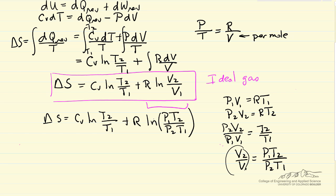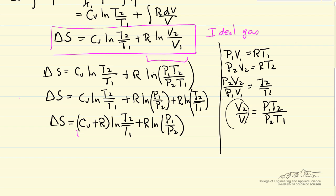Now remember we have log of products, it's the sum of logs. So this second term I can rewrite as log of P1 over P2 plus R log of T2 over T1. And notice we have a log term for T2 over T1 twice, so we can add those together. This term, Cv plus R for an ideal gas, Cv plus R is equal to Cp.